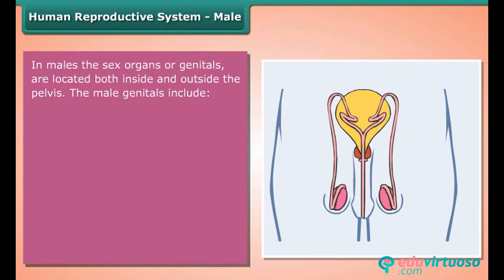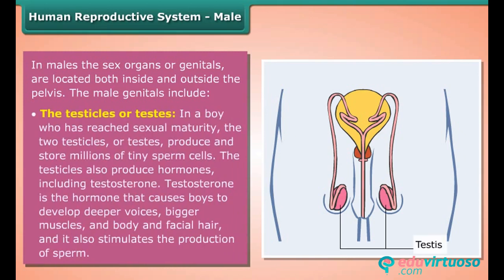In males, the sex organs or genitals are located both inside and outside the pelvis. The male genitals include the testicles or testes. In a boy who has reached sexual maturity, the two testicles produce and store millions of tiny sperm cells. The testicles also produce hormones including testosterone, which causes boys to develop deeper voices, bigger muscles, and body and facial hair.